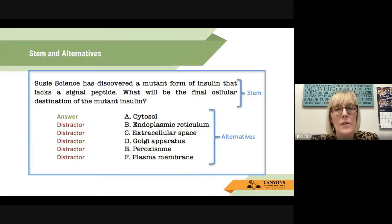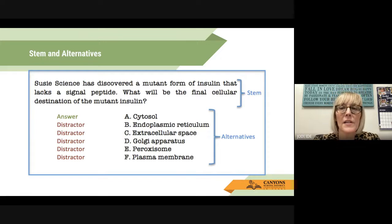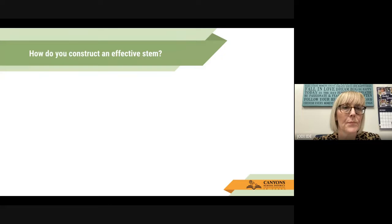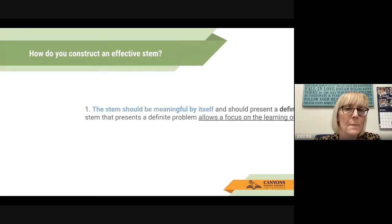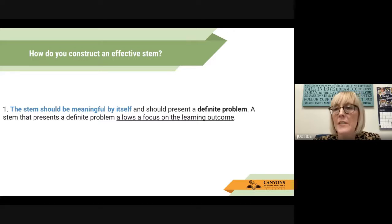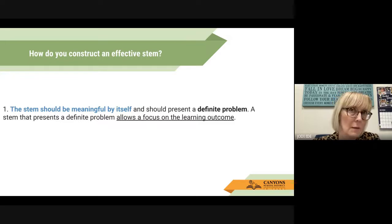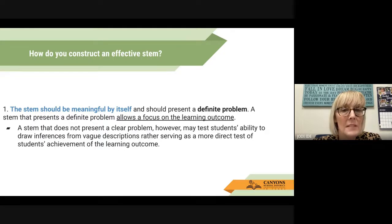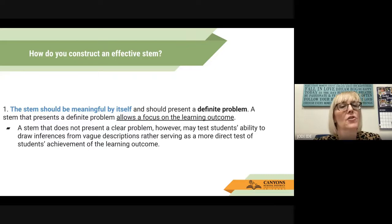If you're watching this on your own, pause for a minute and read the stem and alternatives. Welcome back. You can clearly see the first part of this question is the stem, and then the alternatives with one being the correct answer. The stem should be meaningful by itself and should present a definite problem. A stem that presents a definite problem allows a focus on the learning outcome. A stem that does not present a clear problem may test students' ability to draw inferences from vague descriptions, rather than serving as a more direct test of students' achievement of the learning outcome.